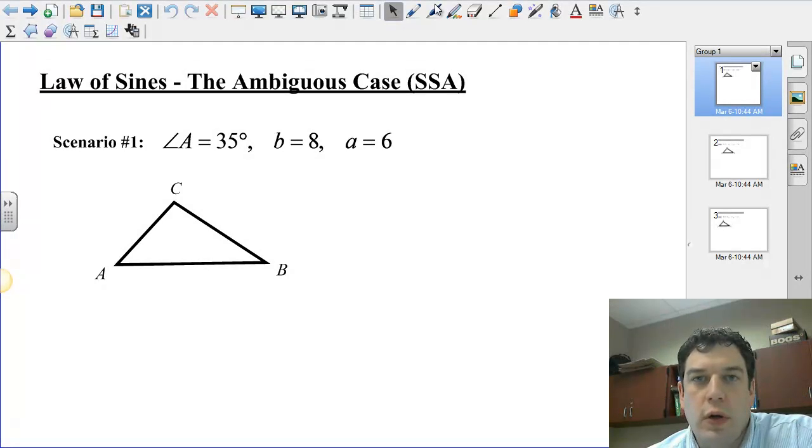Hi everybody, Mr. Garrett here, and we're going to go through three scenarios for the ambiguous case in the Law of Sines. Basically when you're given two sides and an adjacent angle in the SSA scenario, you're going to have either two triangles, one triangle, or no triangles, and you can figure that out through going through the same process each and every time. So I'm going to run through the three scenarios, and I hope this helps you figure this stuff out.